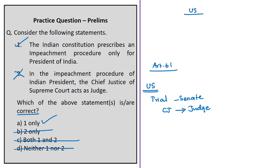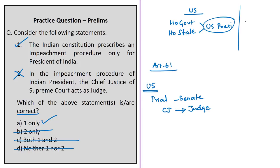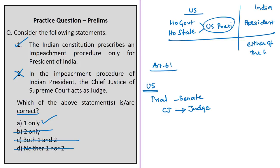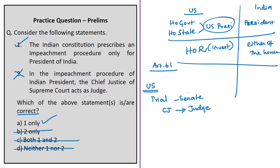Additional notes: In the US, the head of government is also the head of state, and can be subjected to impeachment. In India, the President is head of state, while the Prime Minister is head of government. In India, the impeachment procedure can begin in either House of Parliament, whereas in the US it can only begin in the House of Representatives — with investigation there and the trial in the Senate.